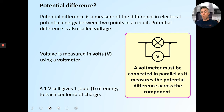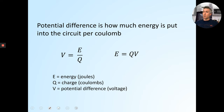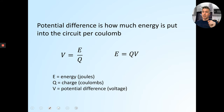One volt is the same as one joule of energy per coulomb, which gives us another equation. The potential difference is how much energy is put in per coulomb. So E is for energy, V is potential difference, and Q is charge — we did that last lesson. The equation is E = QV, so the energy is the charge times the voltage. Write that down.